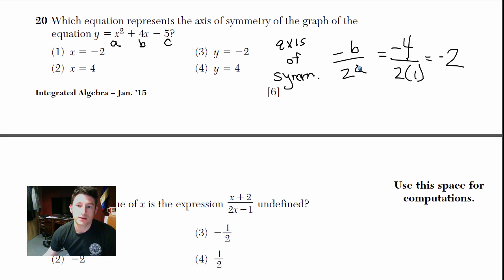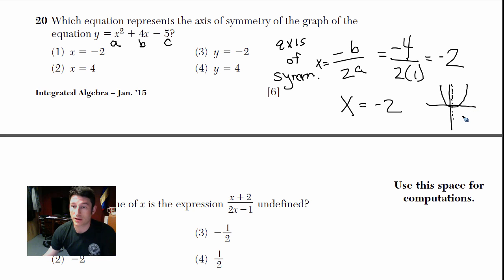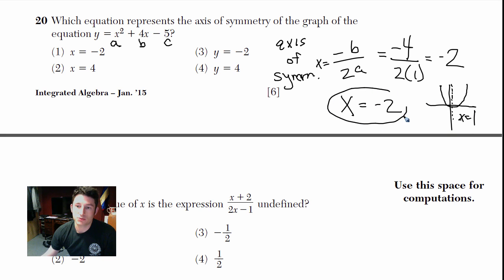Don't forget to write it as x equals — so the answer is x equals negative 2. When you have a parabola, the axis of symmetry is the vertical line that splits it in half. Vertical lines are always written as x equals something. So our axis of symmetry is x equals negative 2, choice number 1.